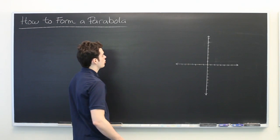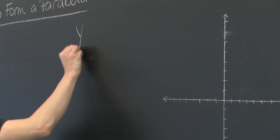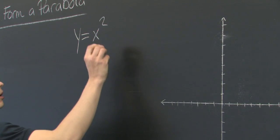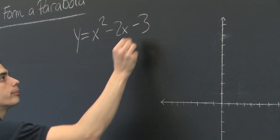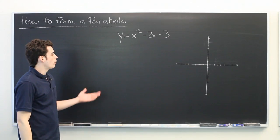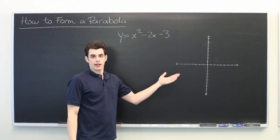Let's suppose that you're given an equation of a parabola like y equals x squared minus 2x minus 3. We want to know what the graph of this looks like.